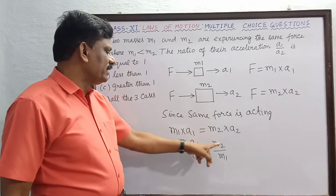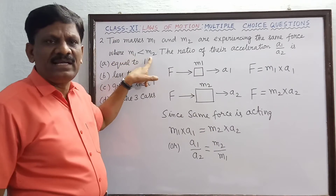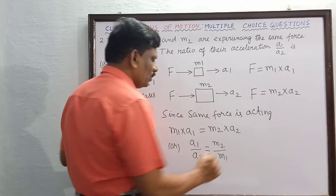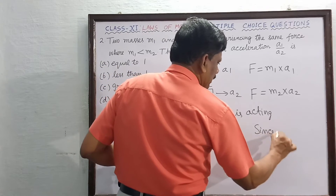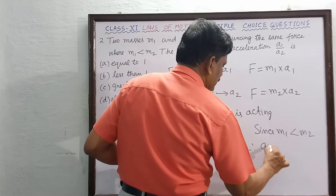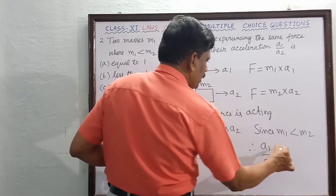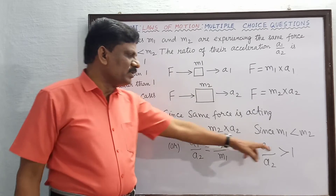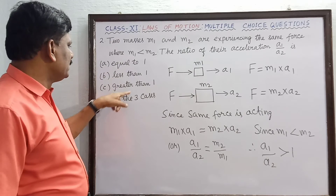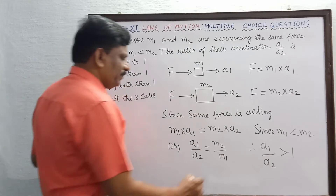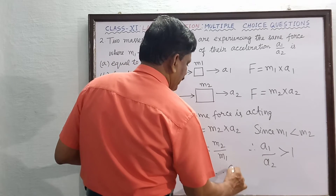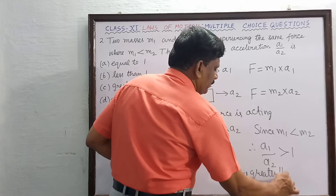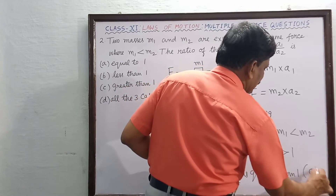Since m1 is smaller than m2, the ratio a1 by a2 equals m2 divided by m1, which must be greater than 1. Therefore, a1 by a2 is greater than 1, and option C is the correct answer.